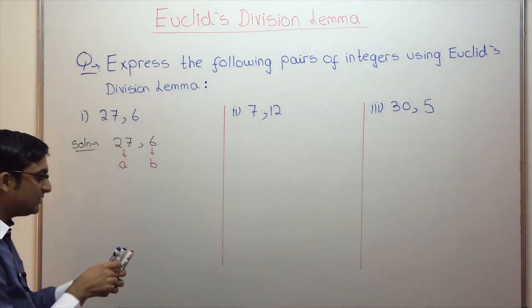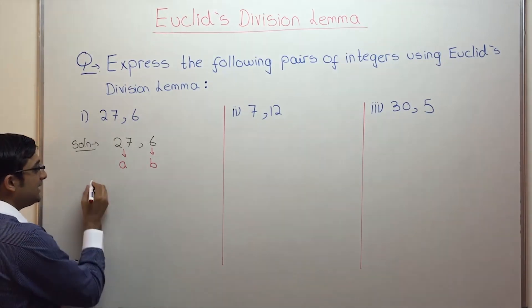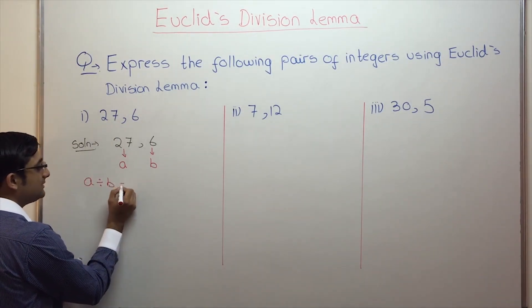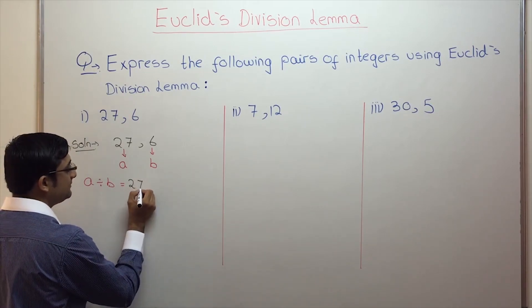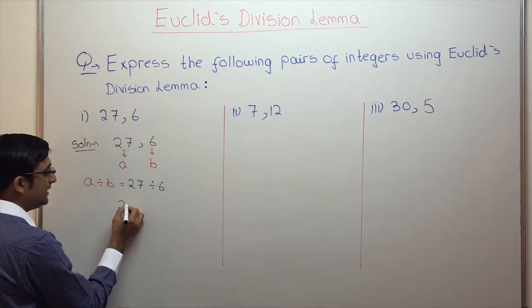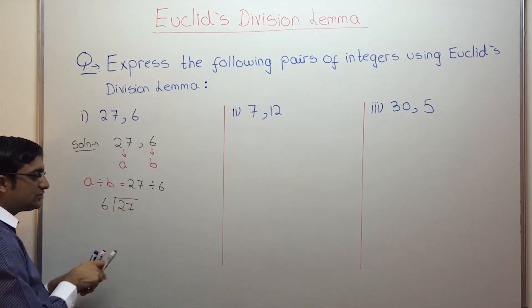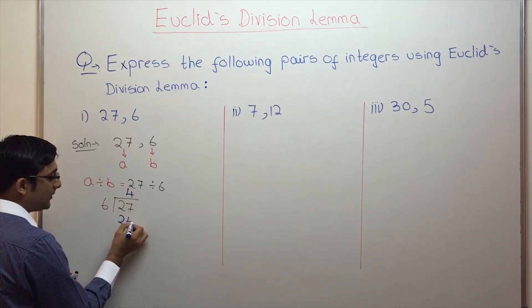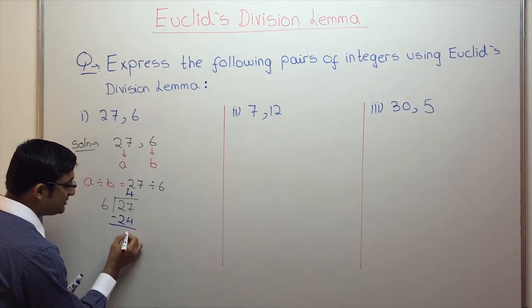The next step is divide the two — A divided by B. That is 27 divided by 6. You can use the long division method. So 27 divided by 6: 6 goes into 27 four times. 4 multiplied by 6 is 24. 27 minus 24 is 3.